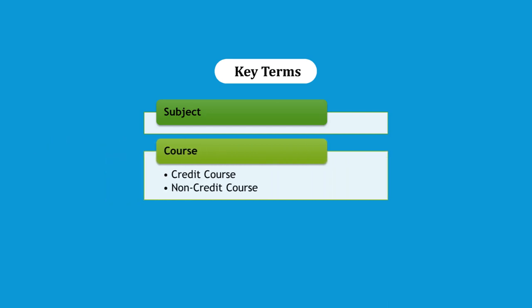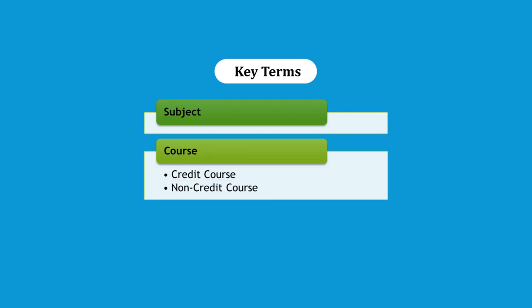The next term is 'course.' There are two types of courses: credit courses and non-credit courses. Credit courses are those taught for at least one semester as part of a specific subject or program. Non-credit courses serve purposes like awareness programs, continuing education programs, or training of specific skill sets as independent courses not part of any set curriculum. They can be of any duration, often short.